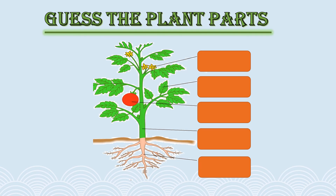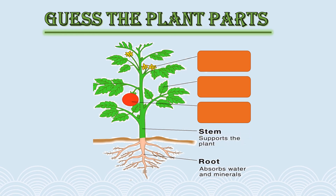We learned about what a plant is and what the main parts of a plant are. Let's see whether we really remember those. Can you guess what part is highlighted right now? It seems to be part of the root system of the plant — it's the root! It absorbs water and minerals from the soil. Which is the second part? It is the stem — it supports the plant's leaves, branches, fruits, and flowers.